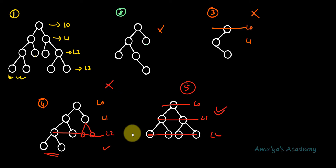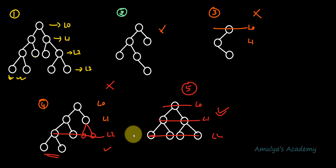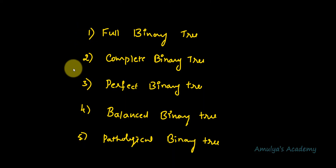To summarize: for a full binary tree, check the number of children each node has — it must be 0 or 2. For a complete binary tree, check all levels: all levels except the last must be completely filled, and in the last level nodes must be filled from left to right. Next, we will discuss the remaining three types of binary tree in the next tutorial. Thank you for watching — don't forget to subscribe, and I'll see you in the next class!